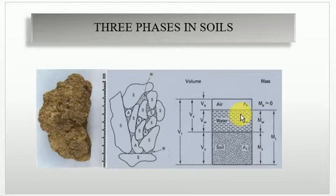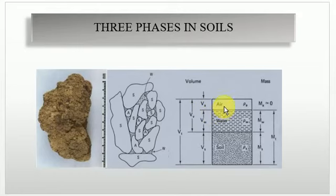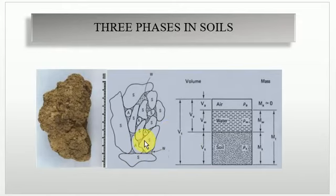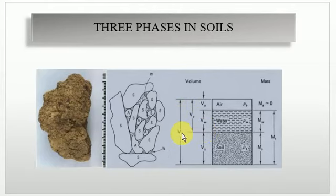Air content can be measured throughout the volume so it is noted by Va. Air content and water content are considered as the volume of voids, because in the soil mass they are stored in the voids — either air or water — so we can consider it as Vv. Total volume is considered as Vt, where V stands for volume and T for total.